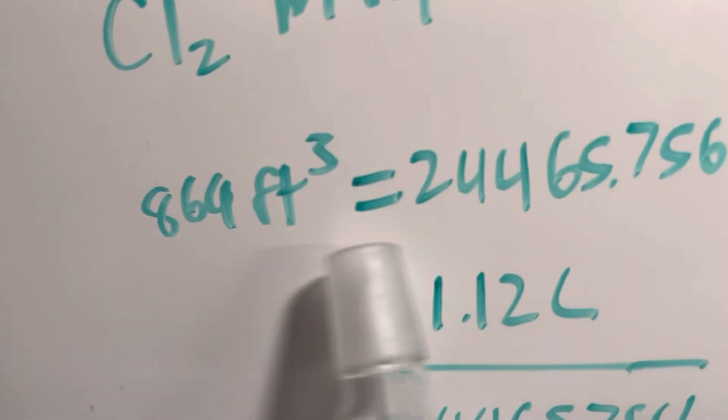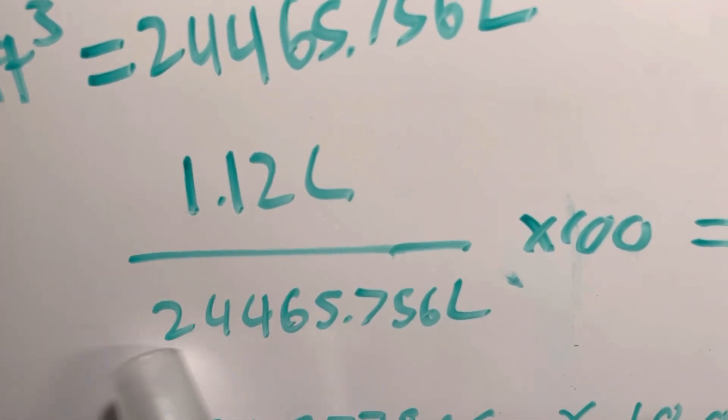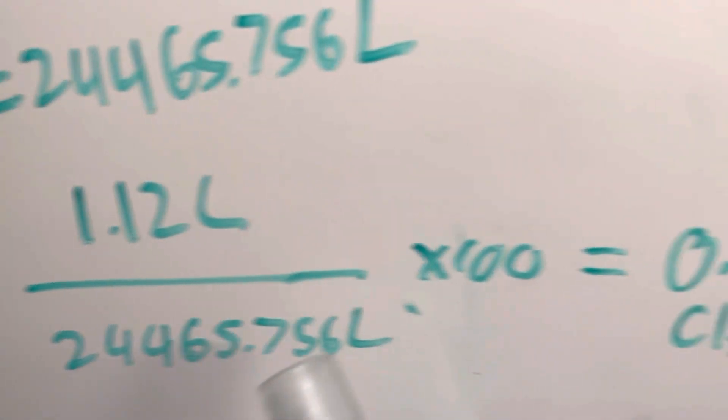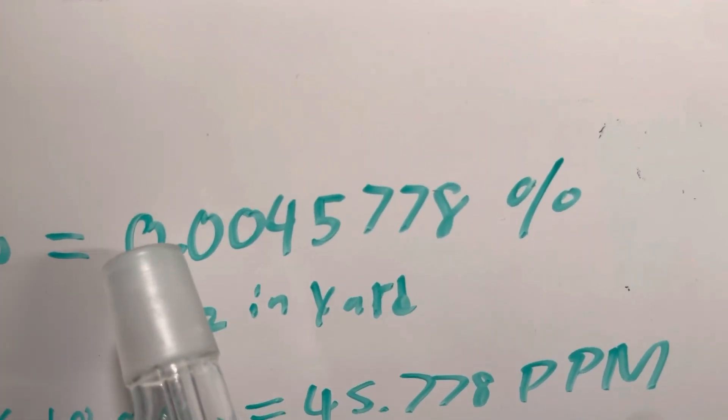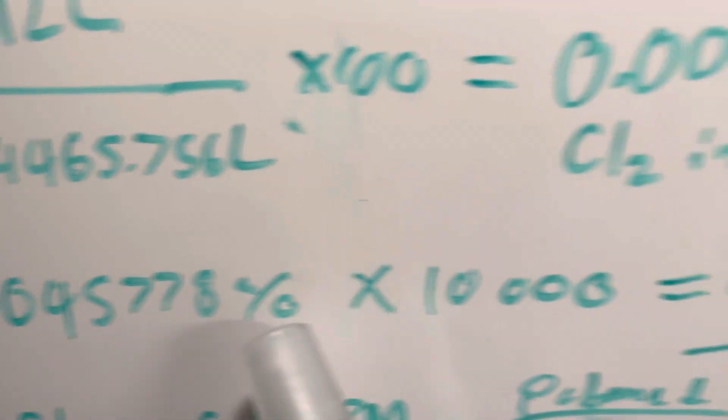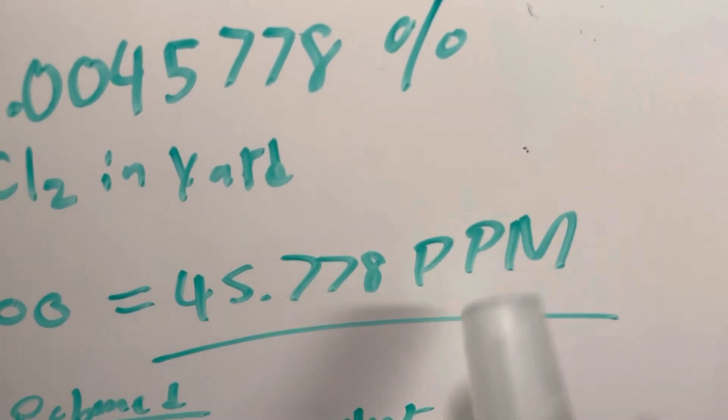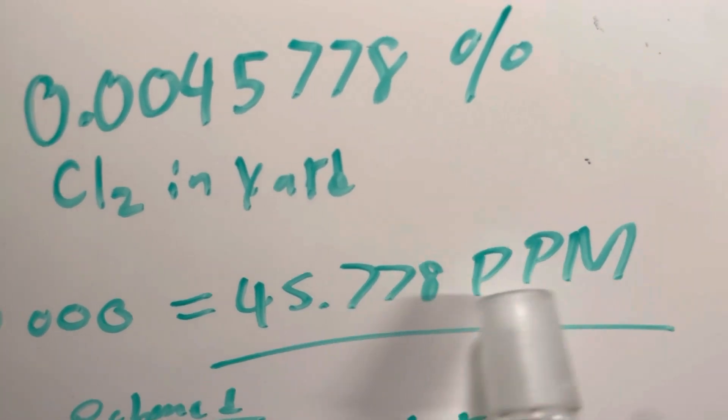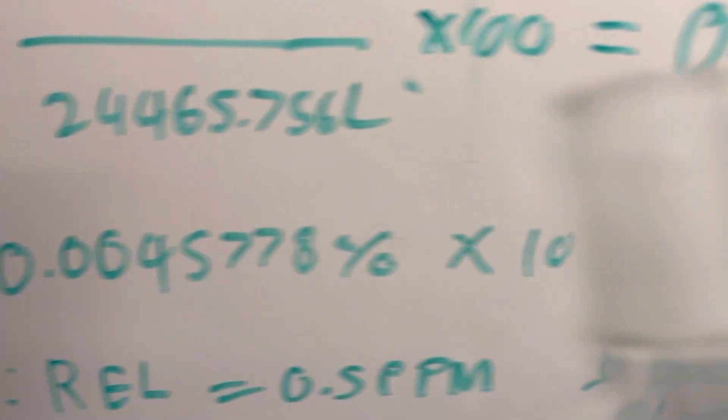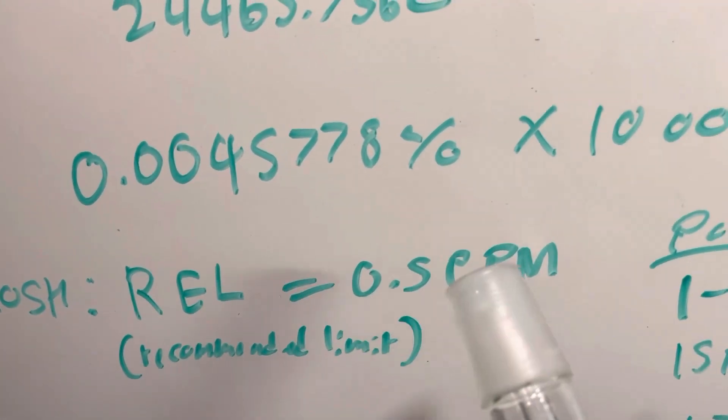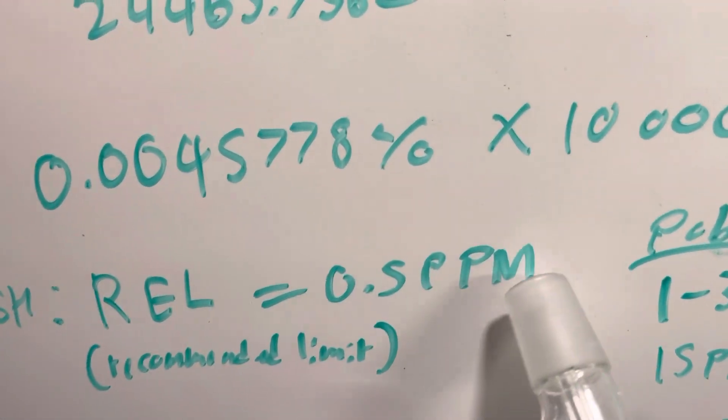Now I take that and divide it by the approximate volume of my yard, and then multiply it by 100, we'll get a percentage of chlorine, which comes out to be 0.0045778%, which seems pretty low, but if we turn that into parts per million, which is how we measure gases in an area, we just multiply percentage by 10,000, we'll get the PPM of 45.778 parts per million. That is a little bit more than 9 times the recommended limit, which is 0.5%, and that's surprising.